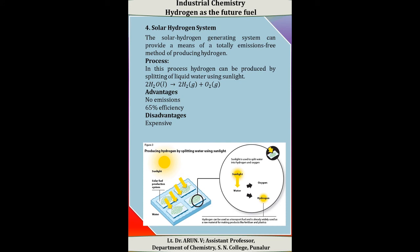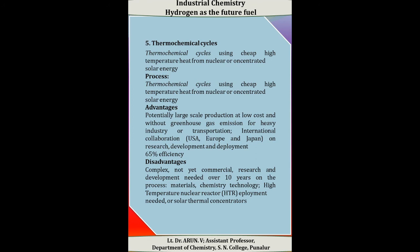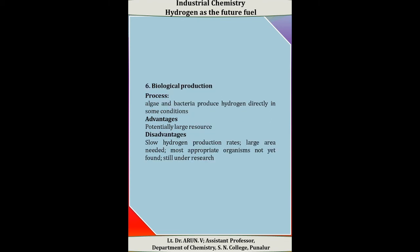Another method is the solar hydrogen system. The solar hydrogen generating system provides a totally emission-free method for producing hydrogen. In this process, hydrogen can be produced by the splitting of liquid water using sunlight: H₂O (l) → H₂ + O₂ in the presence of sunlight. The advantages include no emissions and 65% efficiency. One disadvantage is that it is very expensive. Thermochemical cycle processes are also used in the production of hydrogen gas. Additionally, biological production using algae and bacteria can produce hydrogen directly under certain conditions.